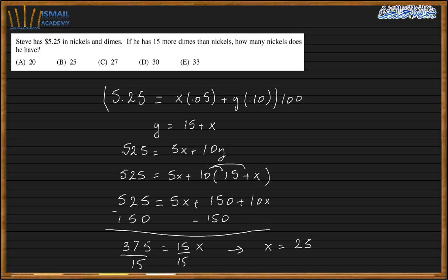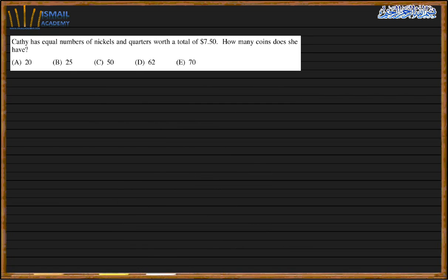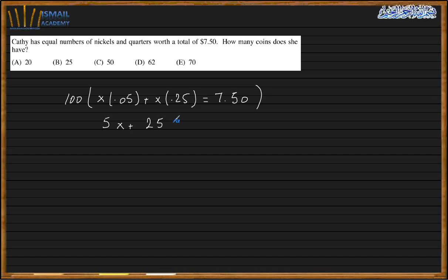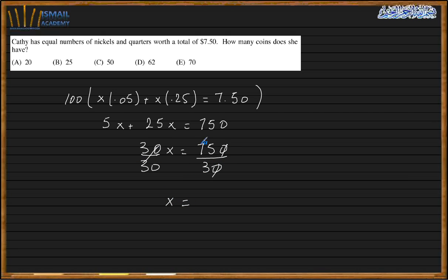For this problem, we have x times 0.50 plus x times 0.25, which represents the value of the coins, and the total is $7.50. Multiplying through by 100 to eliminate decimals: 50x plus 25x equals 750. Combining like terms: 75x equals 750, so x equals 10. Wait — simplifying: 30x equals 750, so x equals 25. B is my answer.